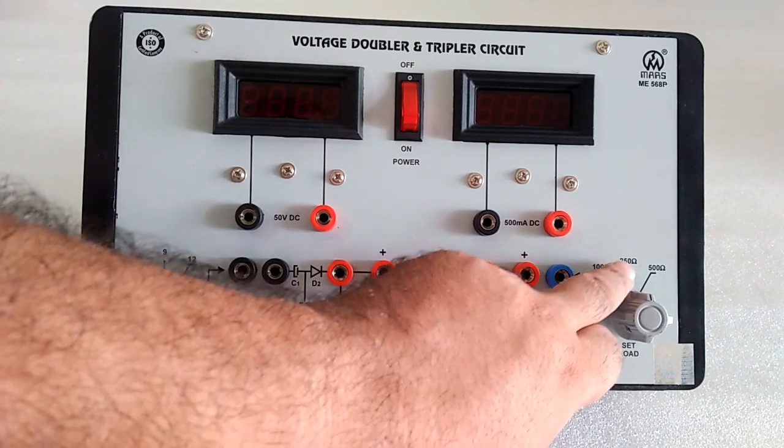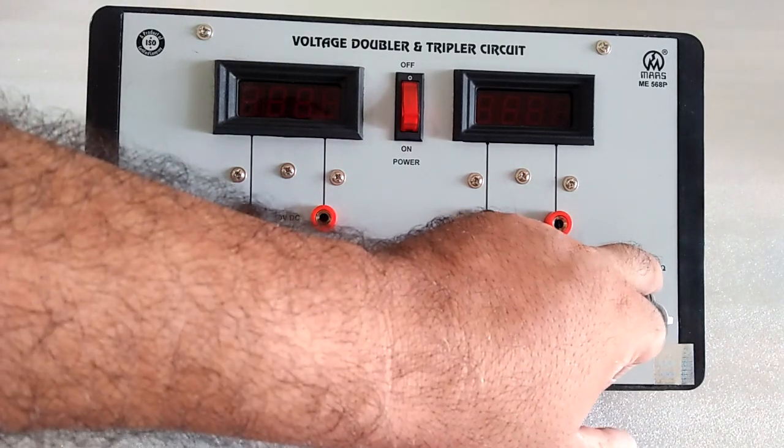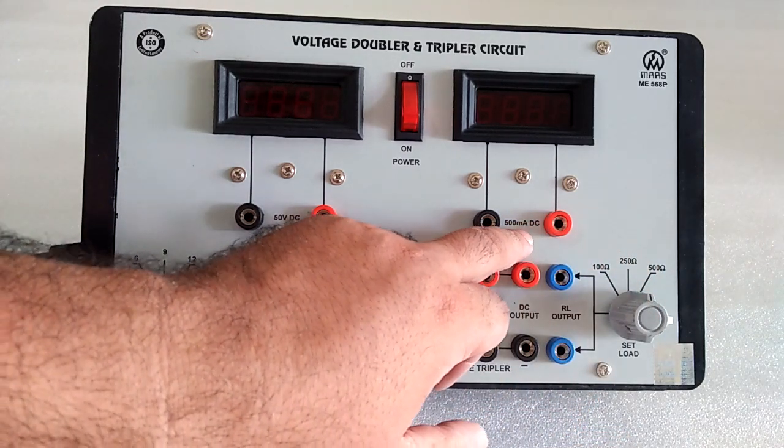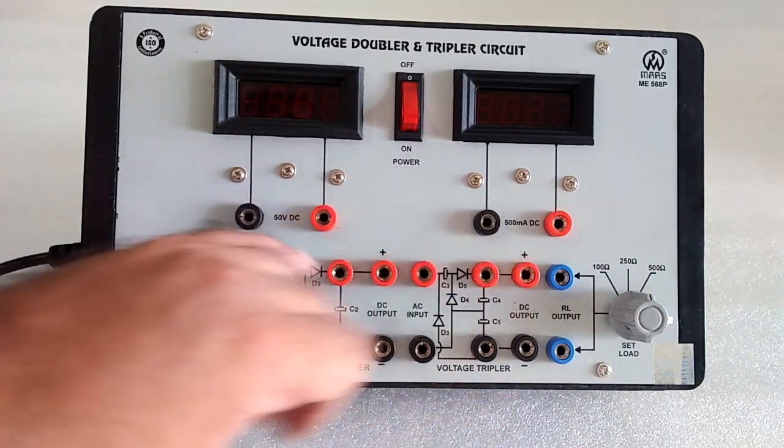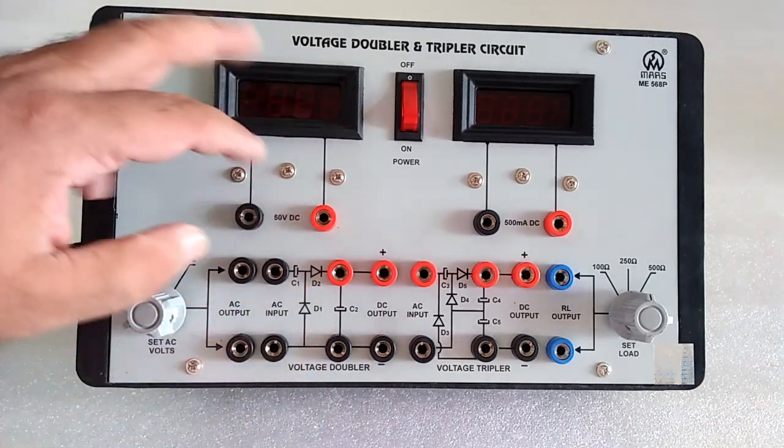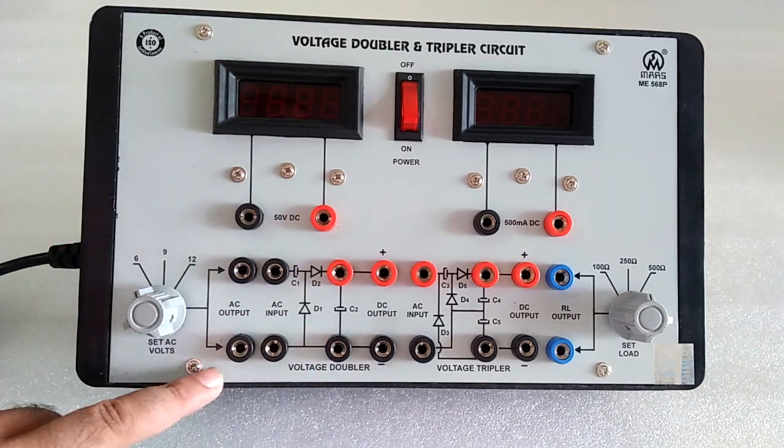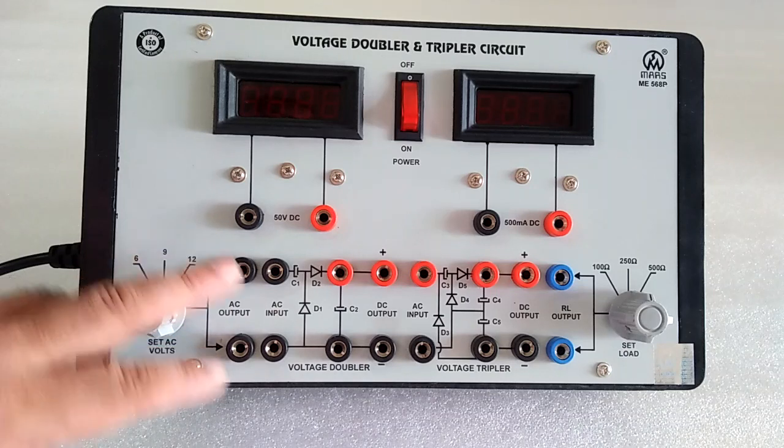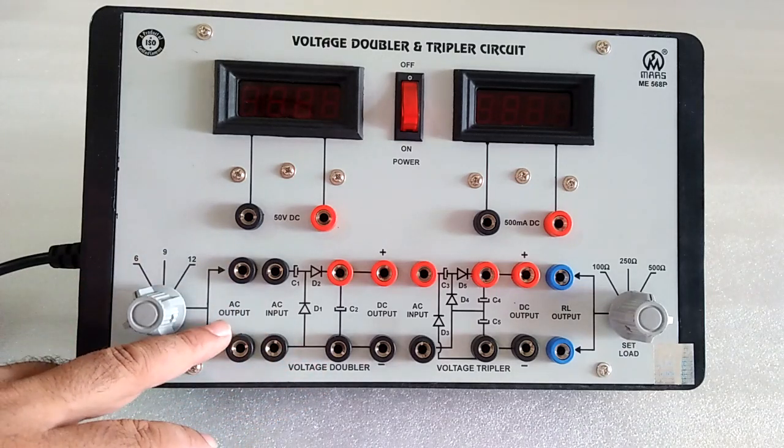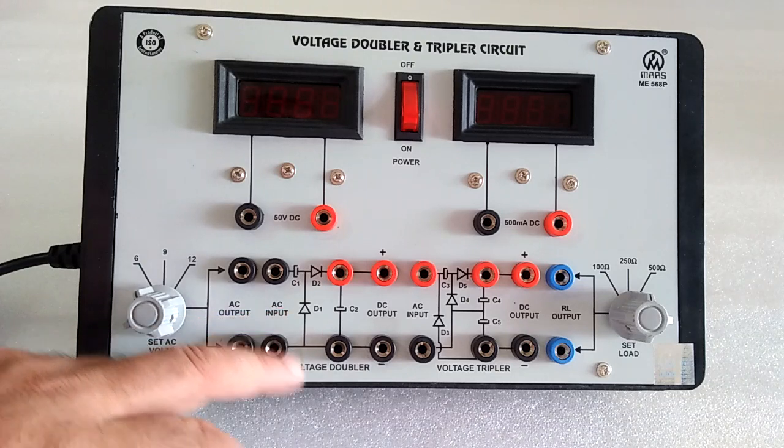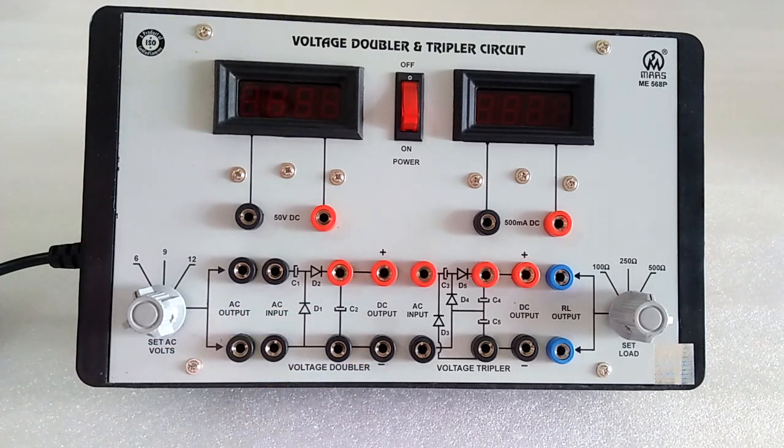The load values are 100 ohm, 250 ohm, and 500 ohm. We have a 500 milliampere DC current meter and a 50 volt DC voltmeter.